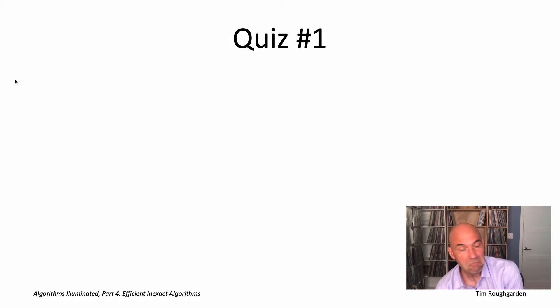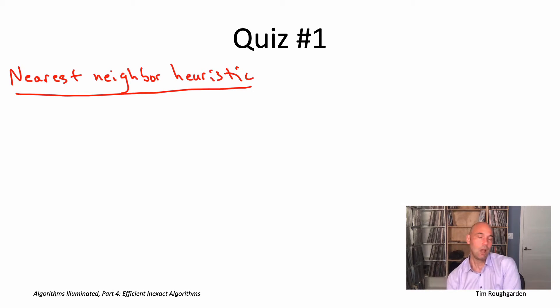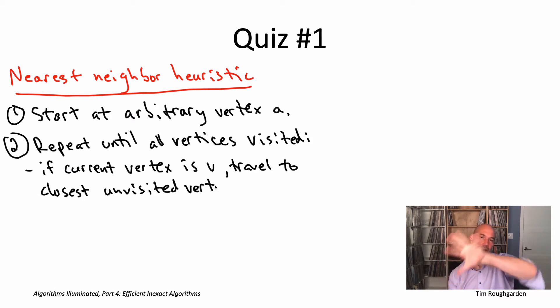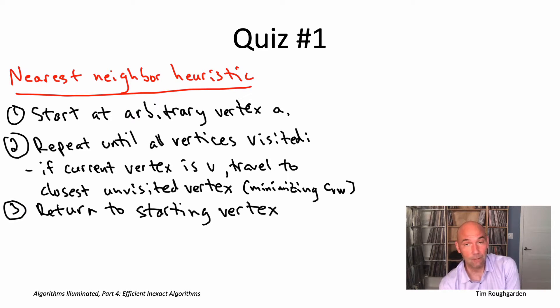It's a greedy heuristic known as the nearest neighbor heuristic for the TSP. You start at your favorite vertex, call it a, and build up a tour one edge at a time in a greedy, myopic way. From vertex a, you go to the closest vertex among the n-1 options. Then from there, you go to the closest unvisited vertex among the remaining n-2. You repeat this. After n-1 iterations, you have a path visiting every vertex exactly once, and then in the final step, you return to where you started.